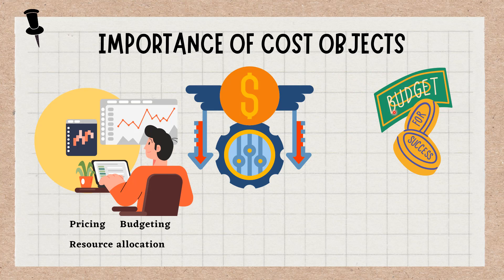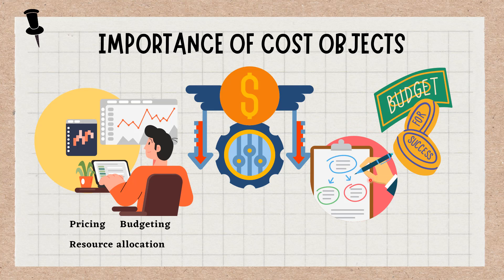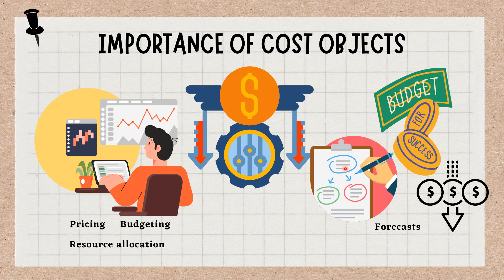Cost objects are also essential for budgeting and planning purposes. By analyzing historical data for different cost objects, businesses can develop accurate budgets and forecasts for future expenses. This information can help businesses plan for future growth, identify areas where costs can be reduced, and make strategic decisions about resource allocation.